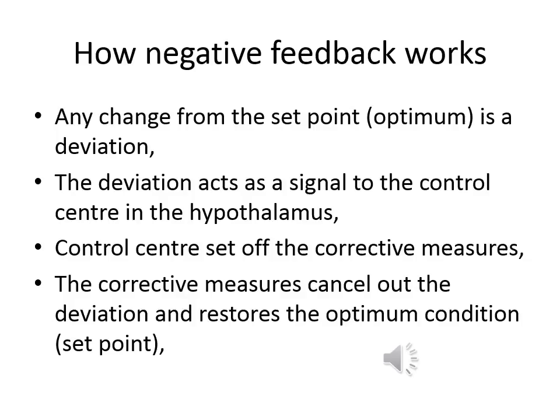We will take this moment to explain how negative feedback works. Negative feedback works by any change from the optimum being considered as a deviation. The deviation then acts as a signal to the control center in the hypothalamus. The control center sets off the corrective measures, which cancel out the deviation and restore the optimum condition, that is the set point.